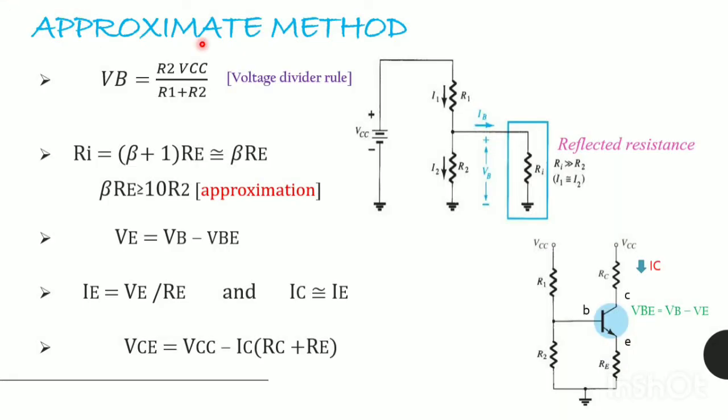In the approximate method, this RI resistance, that is our reflected resistance, is considered to be the equivalent resistance between our base and the emitter for the transistor with resistance RE. This reflected resistance RI is defined as beta plus 1 into RE. If this RI is much greater than R2, then our IB current will be much smaller than the I2 current. Then, our I1 will be approximately equal to I2.